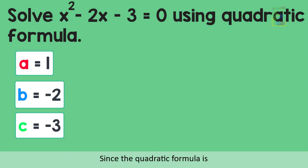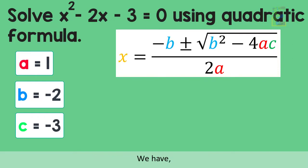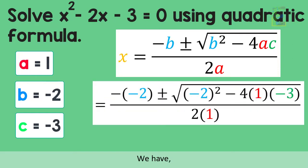Since the quadratic formula is x equals negative b plus or minus square root of b squared minus 4ac over 2a, we have x equals negative of negative 2 plus or minus square root of negative 2 squared minus 4 times 1 times negative 3, all over 2 times 1.